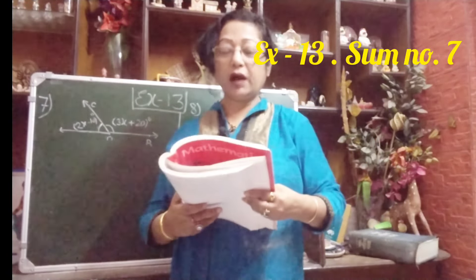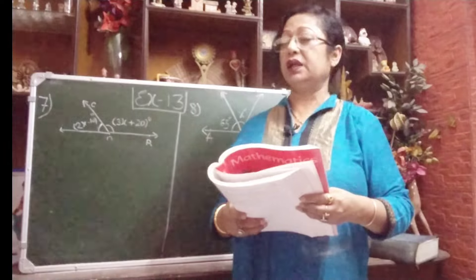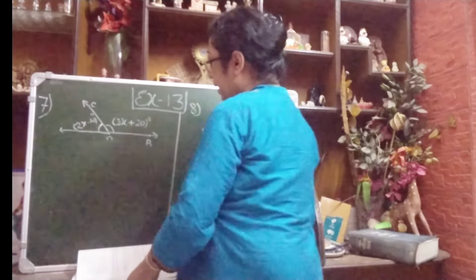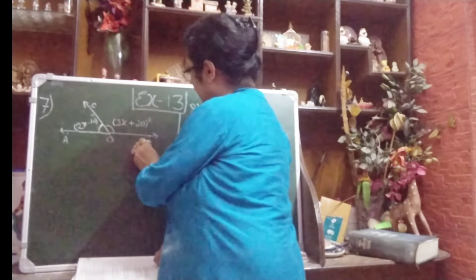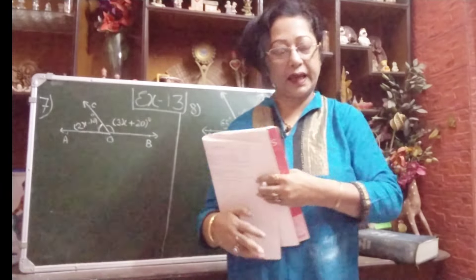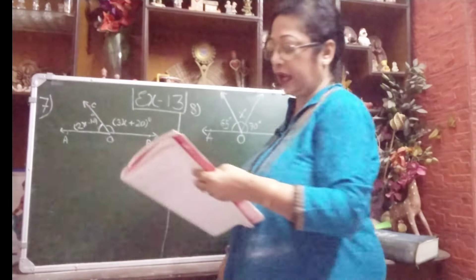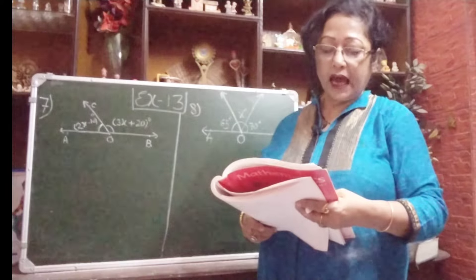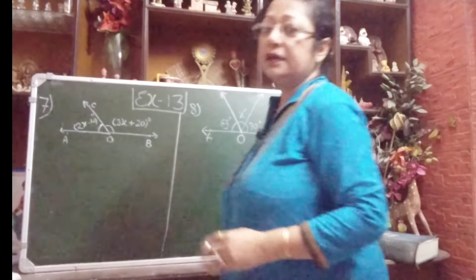In sum number 7, take your book and see: in the given figure, AOB is a straight line and ray OC stands on it, making two angles. Angle AOC equals 2x minus 10 degrees and angle BOC equals 3x plus 20 degrees. Find the value of x and also find angle AOC and angle BOC separately. This is a very easy one.